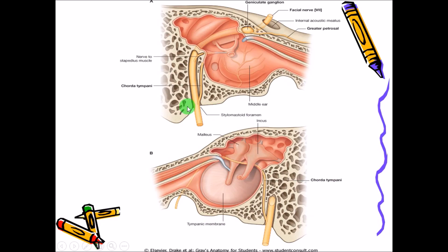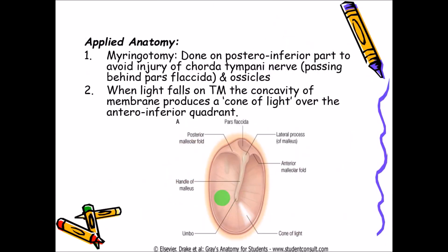As you can see, the facial nerve runs all the way and the chorda tympani nerve branches from it. It runs between the pars flaccida and the pars tensa, passing between the ossicles. If surgery is done above, it may injure the chorda tympani nerve, so surgeries are done in the posterior and inferior part.